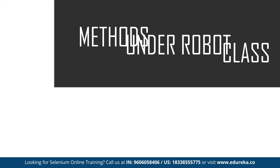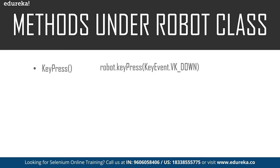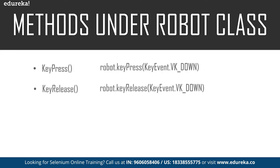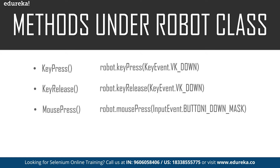The first method is keyPress, which is used to press any key on the keyboard. For example, a particular command will press the up key on the keyboard. Next is the keyRelease method, which is used to release the pressed key of the keyboard. For example, a particular command will release the pressed Caps Lock key on the keyboard. These are the methods used to control the keyboard functions.